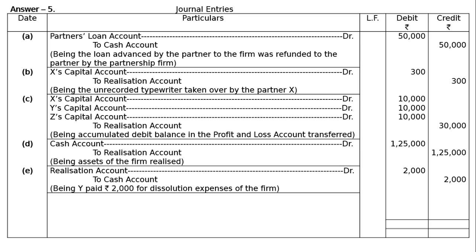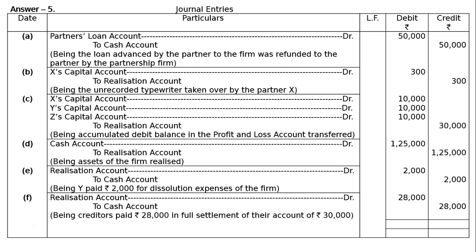Part F: Creditors paid rupees 28,000 in full settlement of their account of rupees 30,000. Realization account debited to cash account rupees 28,000, being creditors paid rupees 28,000 in full settlement of their account of rupees 30,000. The totaling is rupees 1,95,300 both in the debit and credit columns.